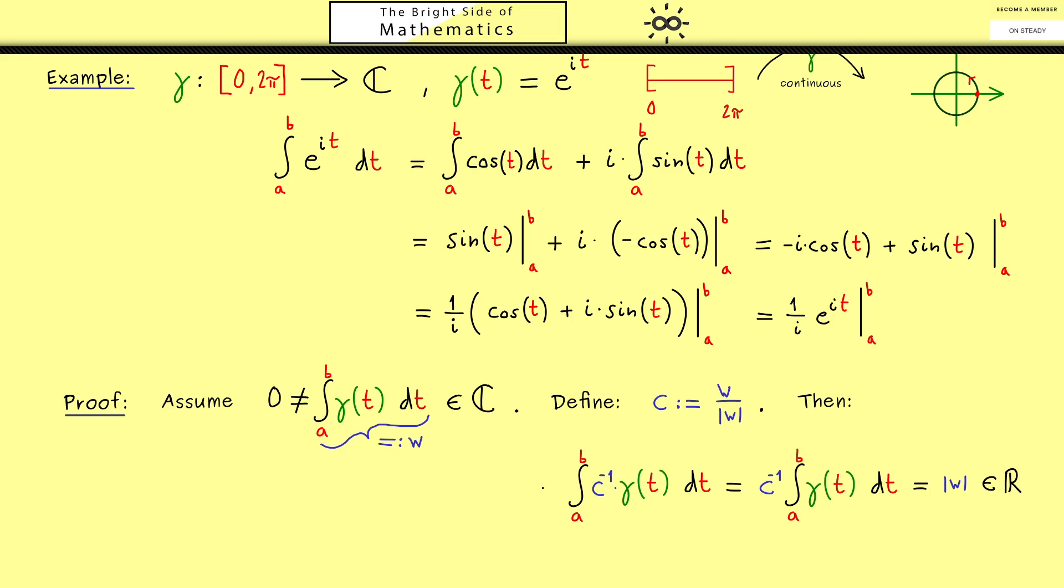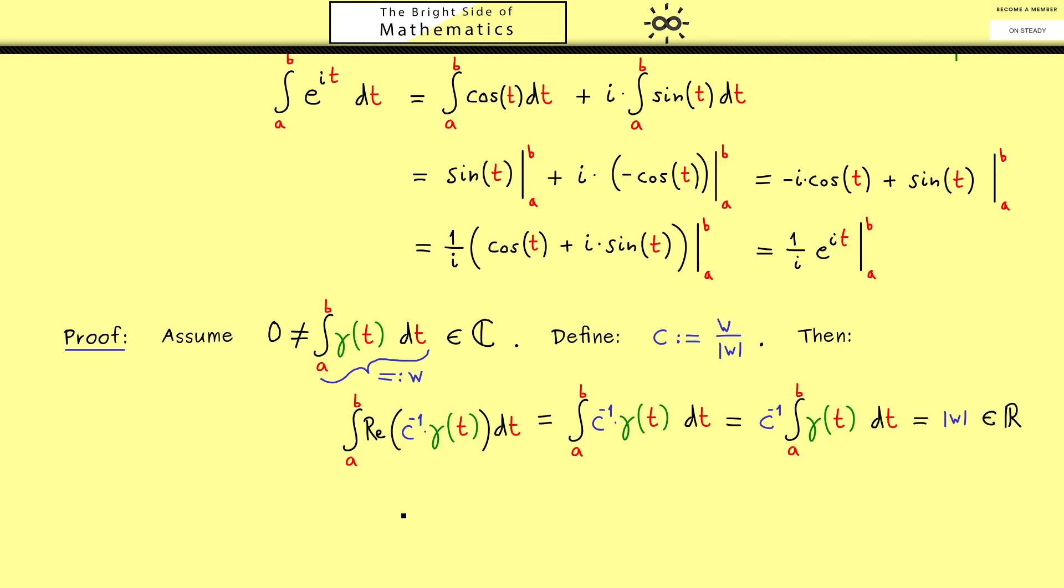However now we know this integral here does not have an imaginary part. To put it in other words by the definition of the complex integral this is equal to the integral of the real part. Moreover now about this real number inside the integral we can say something. More precisely we know that the absolute value of the real part is always less or equal than the absolute value of the complex number. This is simply a fact that holds for all complex numbers.